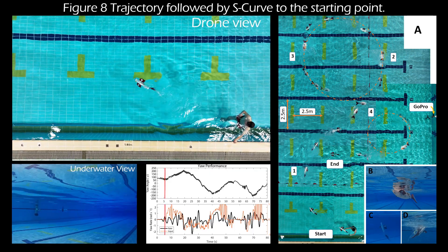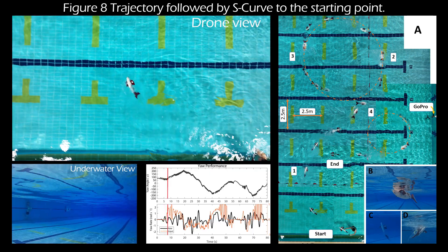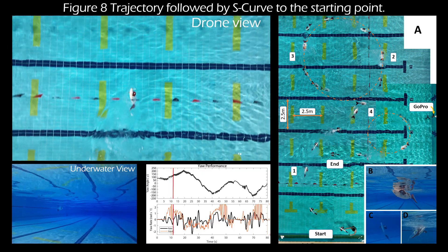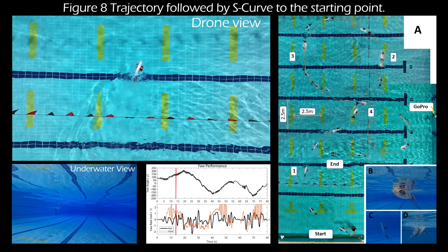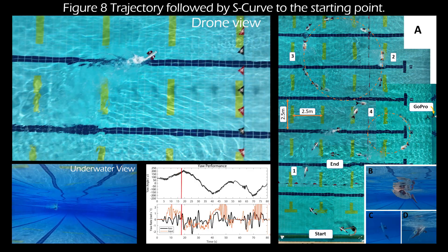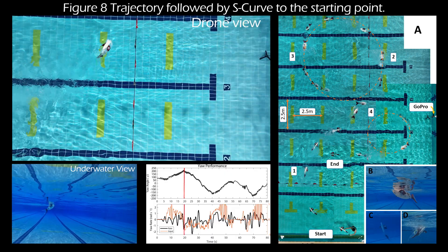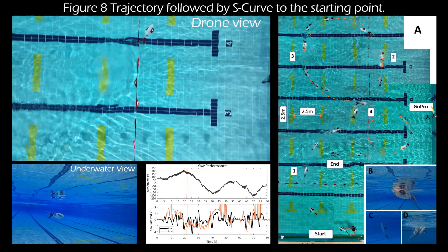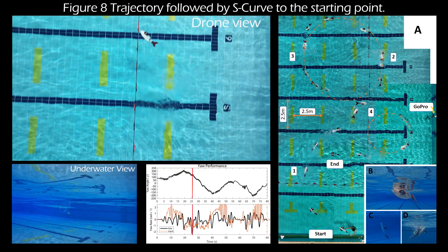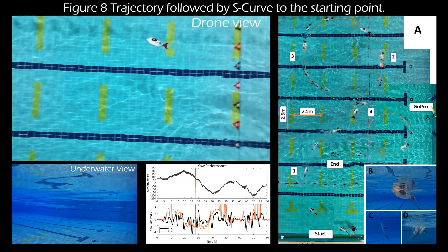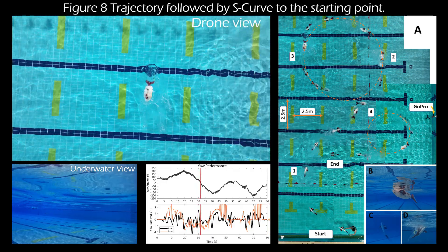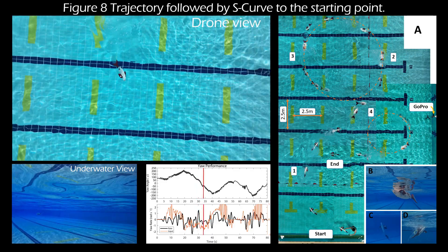Snap is controlled by the pilot throughout the entire swim. Snap begins the first half circle, turning right, with a large turn diameter of 7.5 meters using the cyclic differential method only. The first half is completed, and Snap changes direction to the left at this turning point.